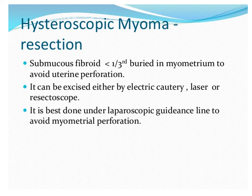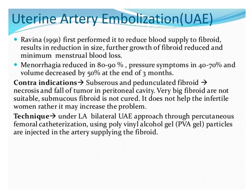Hysteroscopic removal: submucous fibroids can be removed by this means, using electric cautery, laser, or a resectoscope. Uterine artery embolization is a relatively newer technique carried out for larger fibroids where the patient does not want a surgical option.